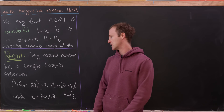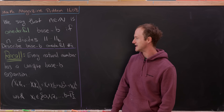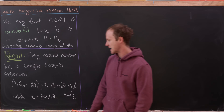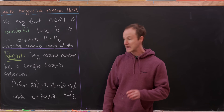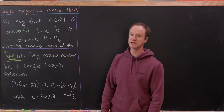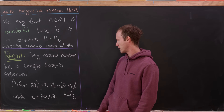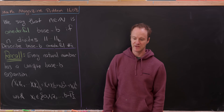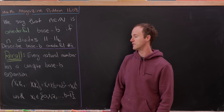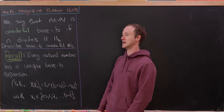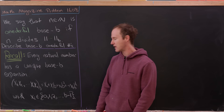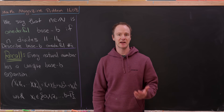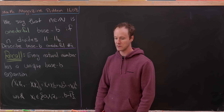Before we get started, let's recall that every natural number has a unique base-b expansion. If the digits are x_k, x_{k-1}, down to x_1, x_0 in base b, that equals x_0 plus x_1 times b plus x_2 times b squared, all the way up to x_k times b^k. Each digit placement corresponds to a different power of base b — just like base 10. The digits must come from the set 0, 1, 2 up to b minus 1.